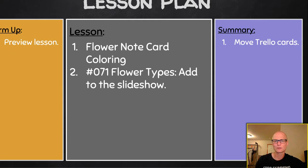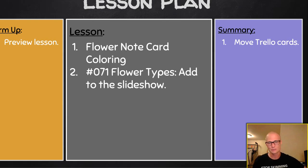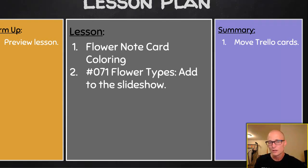You're going to get a flower note card to color on paper, and then number 071 flowering types — you're going to add to the slideshow in both the complete/incomplete and the perfect/imperfect sections. Together our information will allow us to review it and understand the topic.